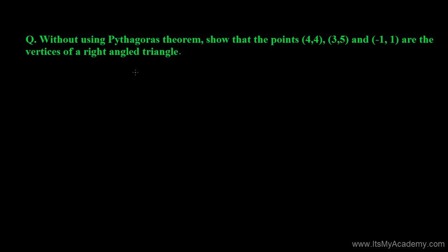Based on the concept of slope, we have another question: without using Pythagoras theorem, show that the points (4,4), (3,5), and (-1,1) are the vertices of a right angle triangle. These three given points are the vertices of a right angle triangle.